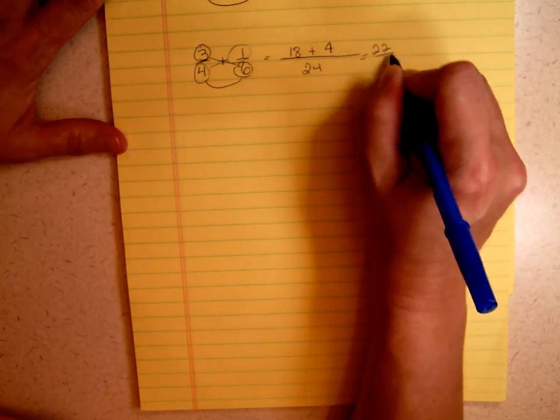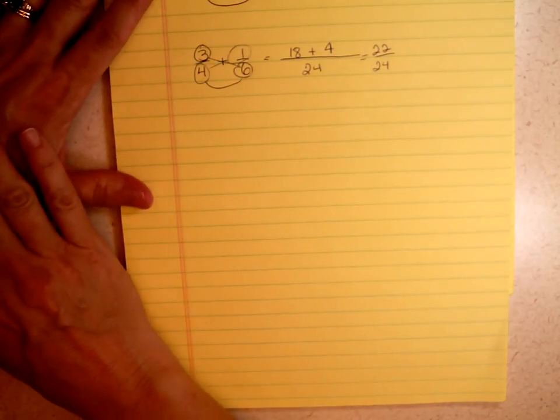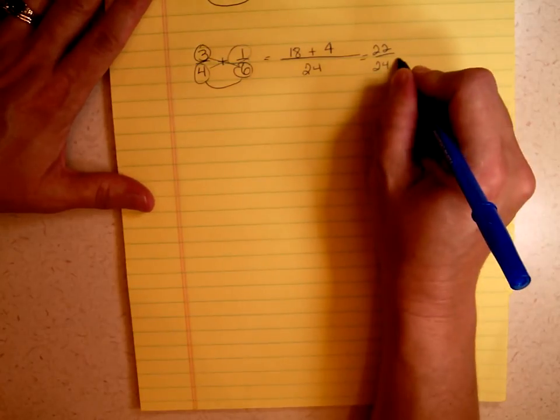So I have 22 over 24. And immediately when I see that, because I see that that's an even number, both of those, I know that I can take a 2 out of both of them.